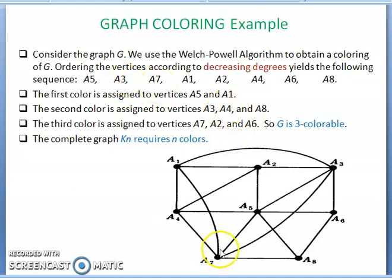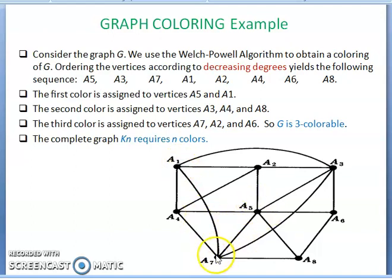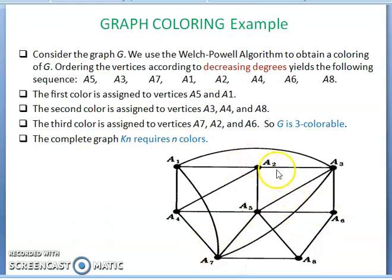The remaining uncolored vertex is A7. Give A7 the third color (yellow). The non-adjacent uncolored vertices to A7 are A2 and A6. So yellow is assigned to A7, A2, and A6 because A2 and A6 are not adjacent to A7 and are uncolored.